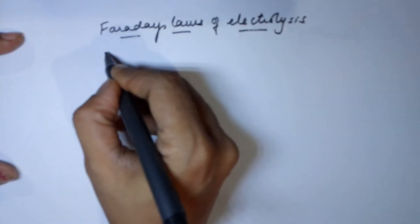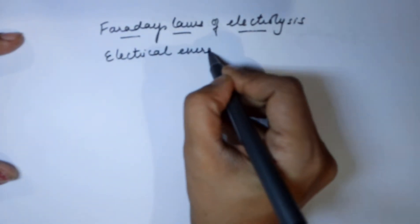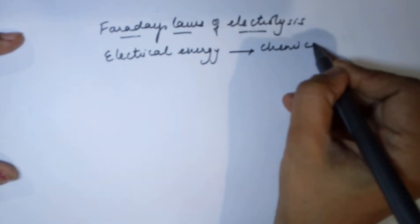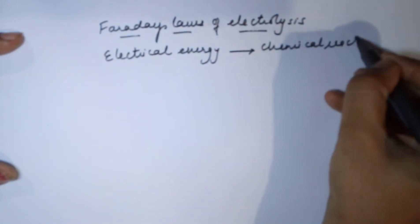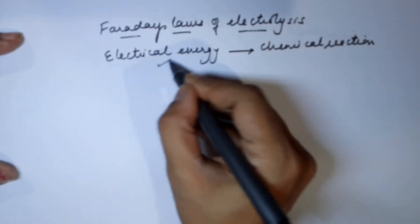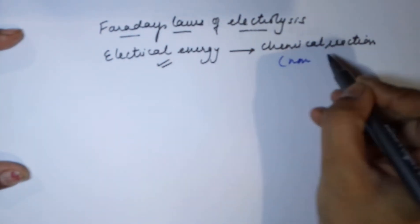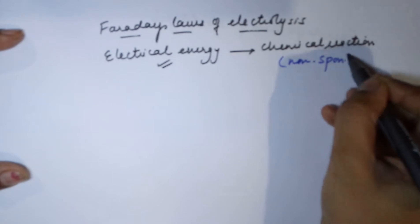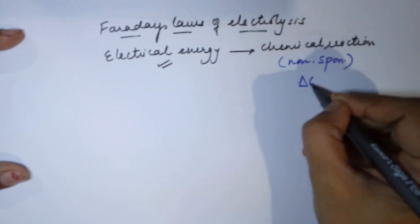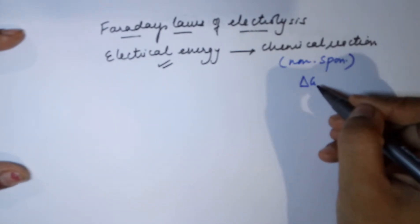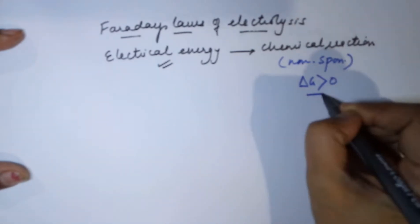Electrolysis is a process where electrical energy is used for a chemical reaction, which means you require a constant source of energy for the chemical reaction to happen. Hence, such a chemical reaction is generally non-spontaneous. That is, the delta G value — Gibbs free energy — for such processes which happen during electrolysis is greater than zero.